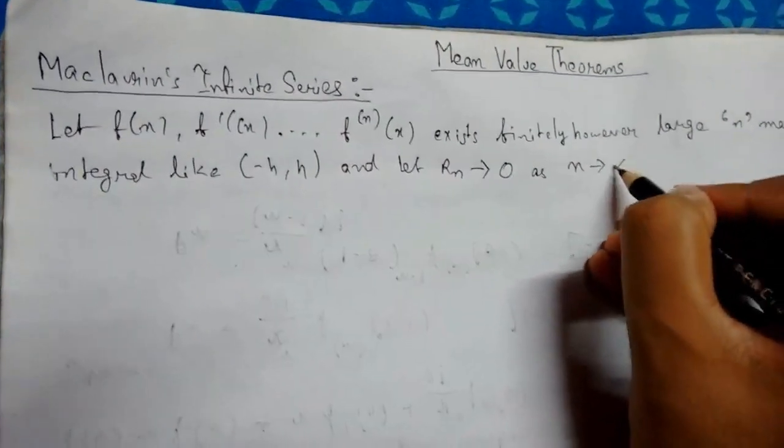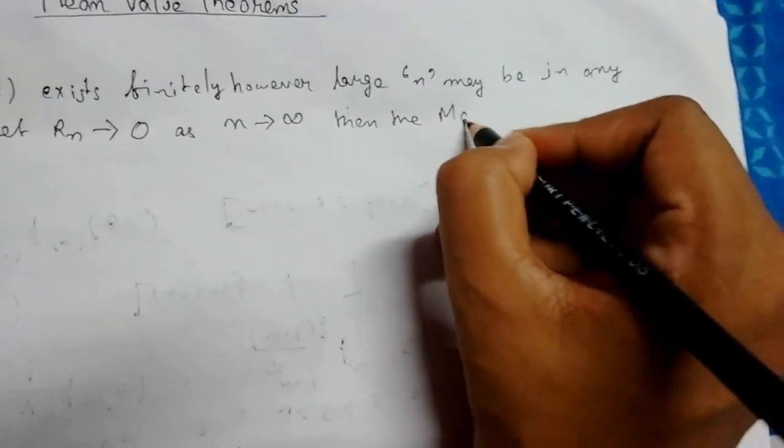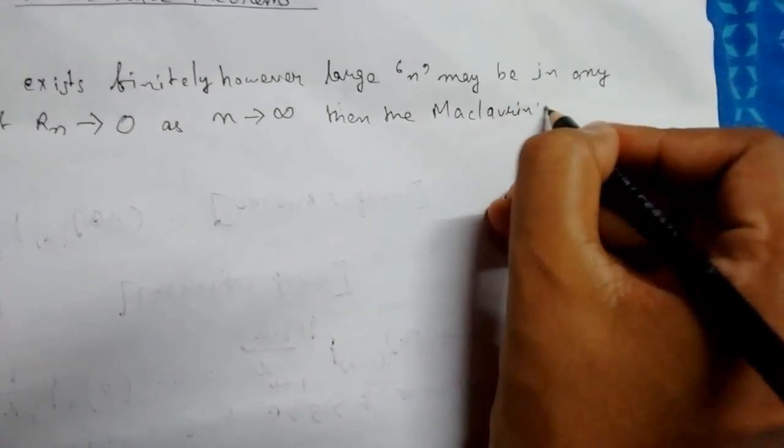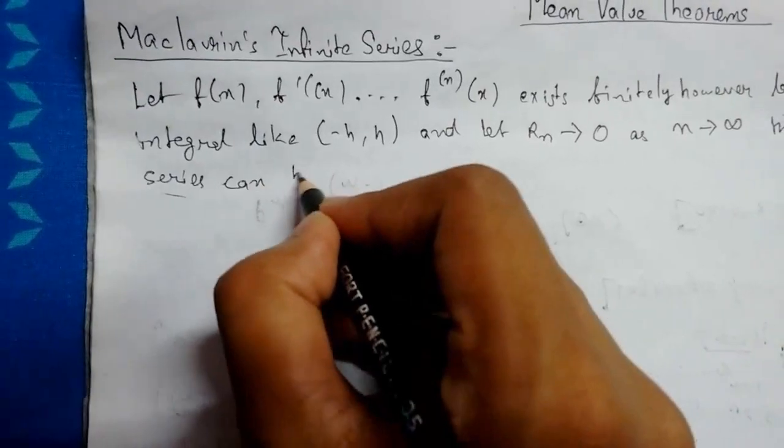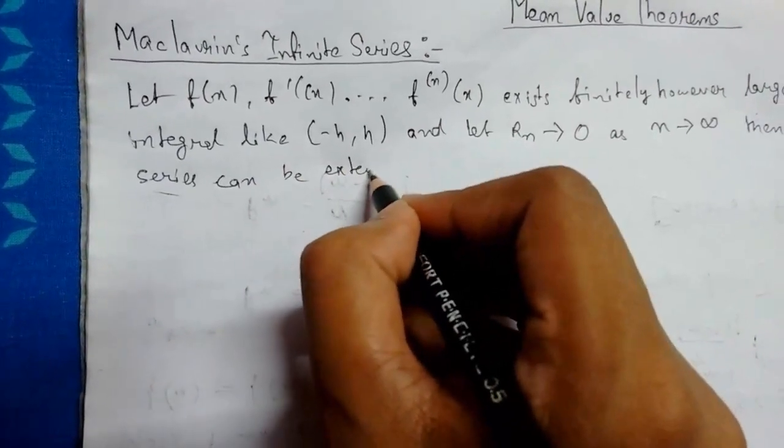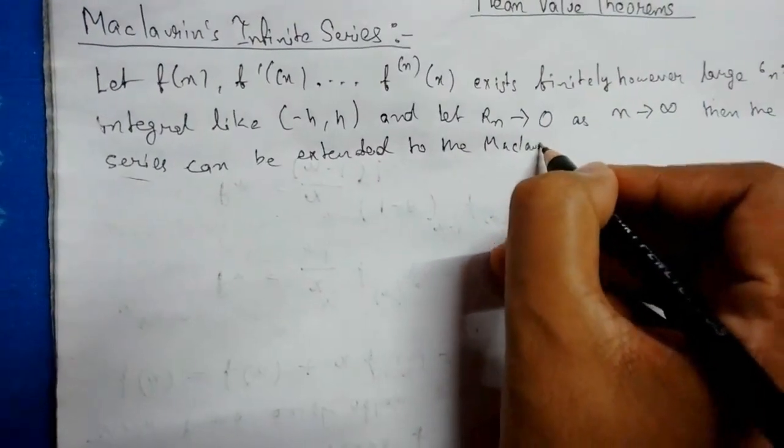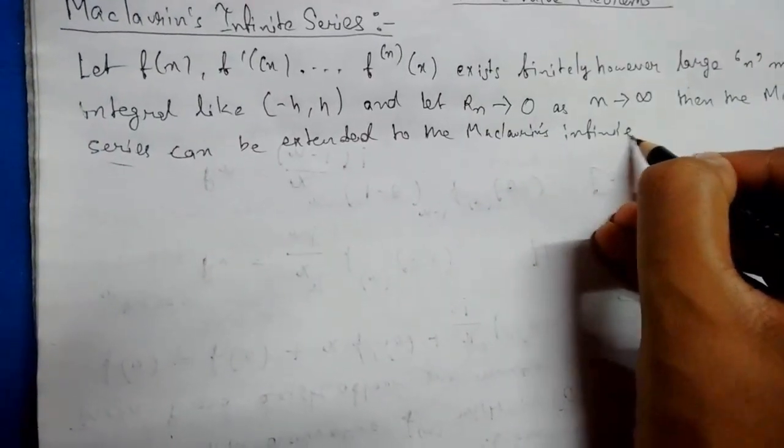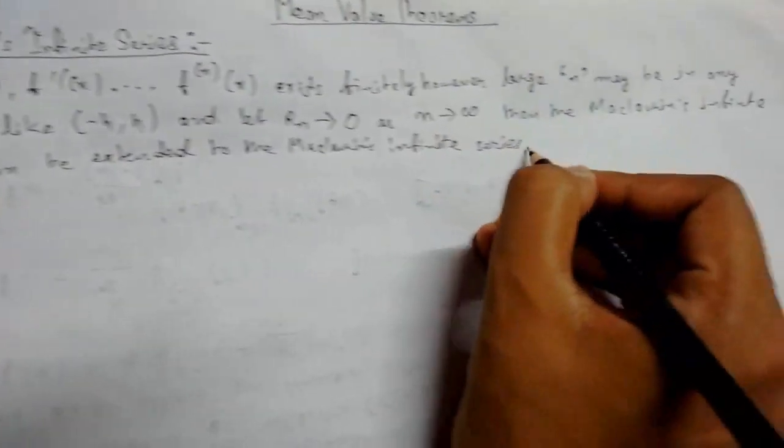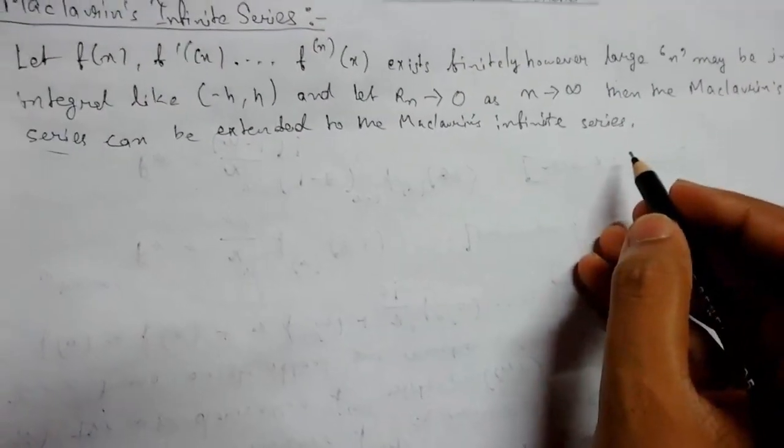tends to infinity, then Maclaurin's finite series can be extended to Maclaurin's infinite series. Maclaurin's finite series can be converted into Maclaurin's